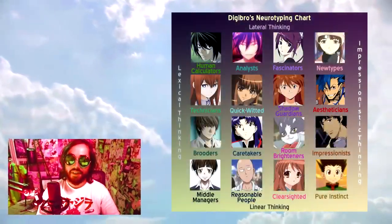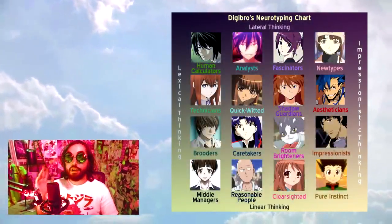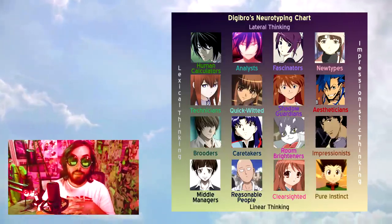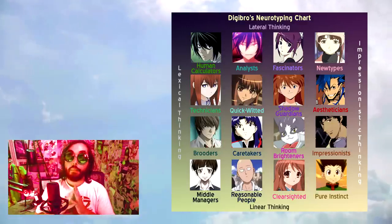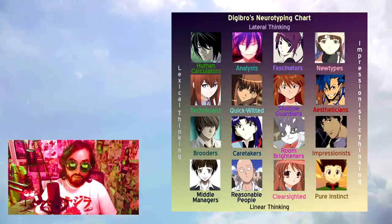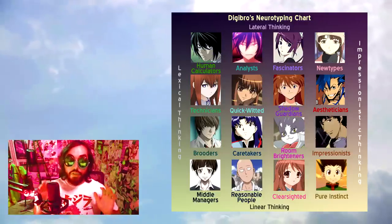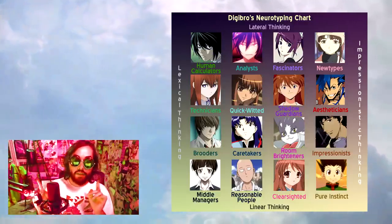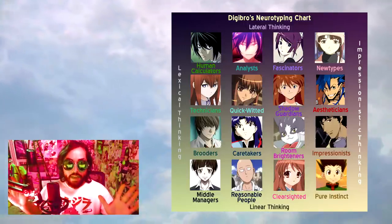That's where my neurotyping chart comes in. Not unlike MBTI, I've broken down human neurotypes into 16 categories, which I'll be classifying about 100 anime characters into in the course of this video. Mine is much easier to classify yourself with — you don't need any kind of quiz. Just think about the way you think and find your place along these two axes: linearity and lexicality.